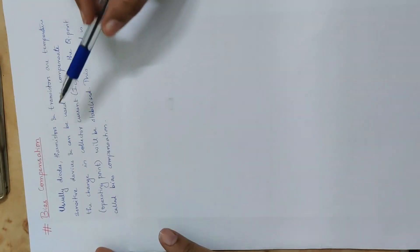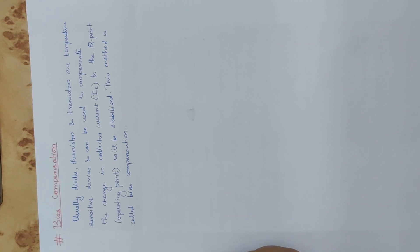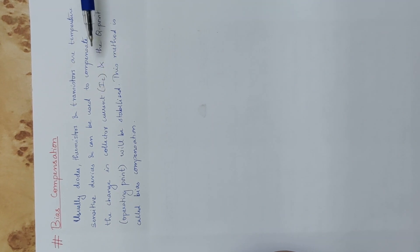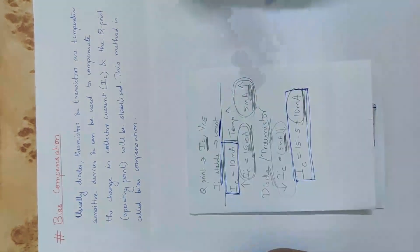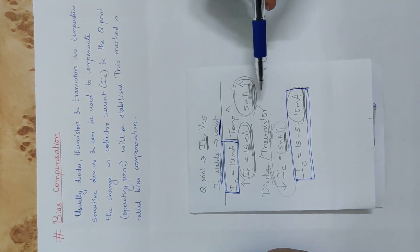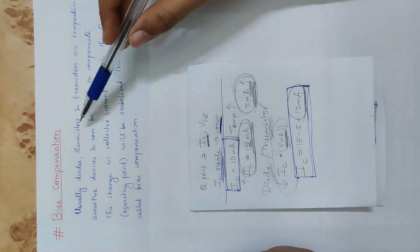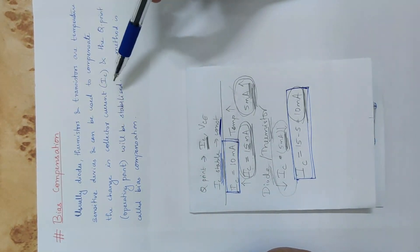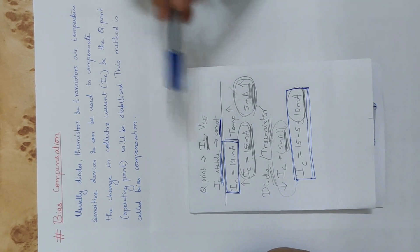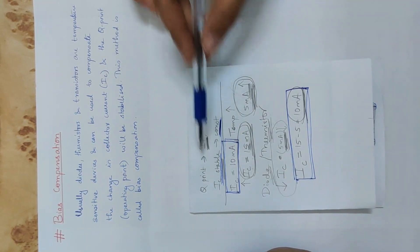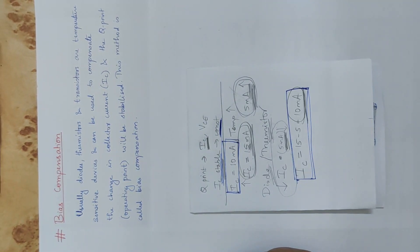Usually, diodes, thermistors, and transistors are temperature-sensitive devices and can be used to compensate for the change in collector current. The increase in IC of 5 mA is corrected, and the Q point is stabilized. IC constant means the Q point — the operating point — is stable.